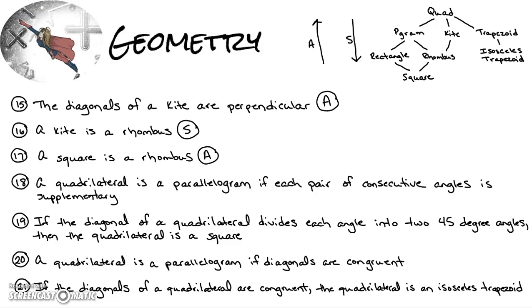Number eighteen: a quadrilateral is a parallelogram if each pair of consecutive angles is supplementary. That is always true, because if each pair of consecutive angles is supplementary it forces the opposite sides to be parallel — by the theorem that supplementary consecutive angles imply parallel lines — which means it is definitely a parallelogram.